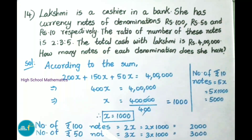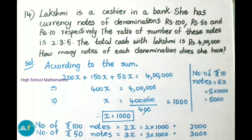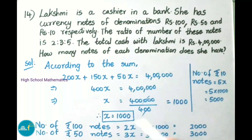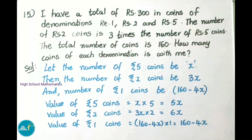Therefore number of 100 rupees notes is 2x, that is 2 times 1000, which is 2000. Number of 50 rupees notes is 3x, that is 3 times 1000, which is 3000. Number of 10 rupees notes is 5x, that is 5 times 1000, which is 5000.